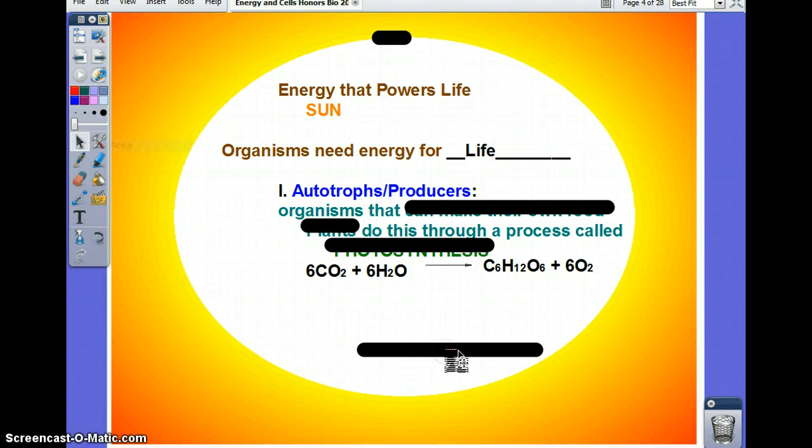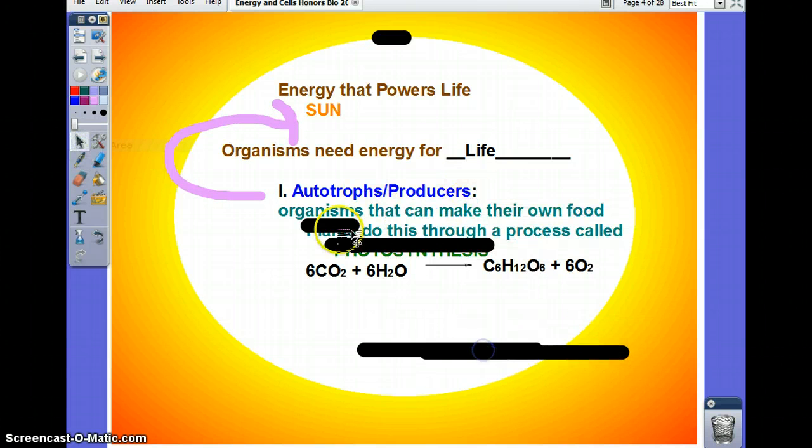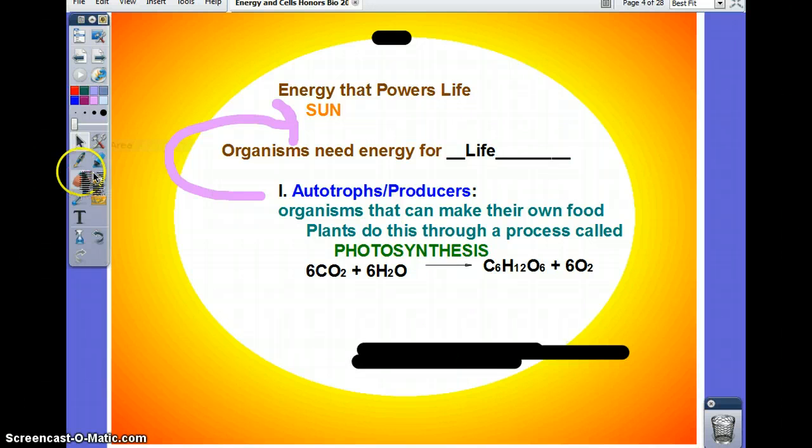Autotrophs, or producers, are the organisms that use energy from the sun directly. They take in the sunlight and they make their own food. Organisms that can do this are mainly plants, and they do this through a process called photosynthesis.